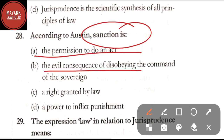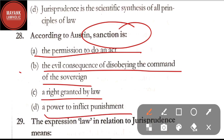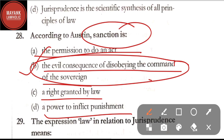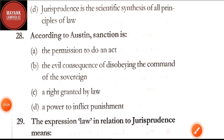Question number 28: according to Austin, sanction is — option A: the permission to do an act; option B: the evil consequence of disobeying the command of the sovereign; option C: a right granted by law; option D: a power to inflict punishment. The correct answer is option B, the evil consequence of disobeying the command of the sovereign.